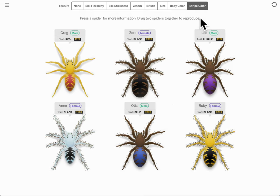Otis and Ruby are two different spiders, and we're going to look at their genes for stripe color and how they lead to protein molecules and therefore traits when we look at their offspring to see how their traits passed down.